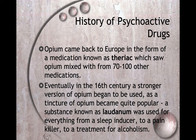Opium came back to Europe in the form of a medication known as Theriac, which saw opium mixed with 70 to 100 other medications. Eventually in the 16th century, a stronger version — a tincture of opium — became quite popular. A tincture is opium mixed with alcohol; anything that is a tincture is mixed with alcohol. This substance, tincture of opium, is known as laudanum, and was used for everything from a sleep inducer to a painkiller to a treatment for alcoholism — even though it has alcohol in it, as weird as that sounds.